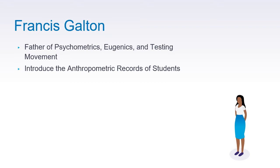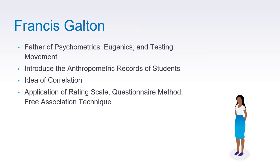If you remember during your elementary or high school days, your physical education teacher would measure such body physical characteristics. Galton also introduced the idea of correlation, where correlation should only be used with variables that are normally distributed — meaning it is based on the norm. He also pioneered the application of the rating scale, questionnaire method, and free association technique.